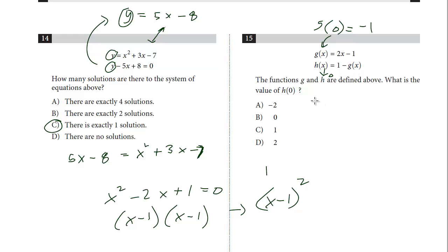Now we can solve h of x. So h of 0 equals 1. We already just figured out that g of x equals negative 1. So this is minus negative 1, which is plus 1. So we know that h of 0 is 2.